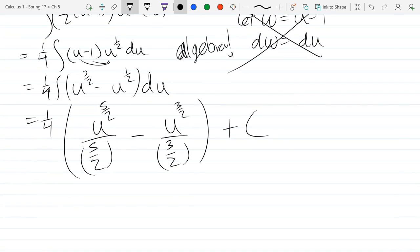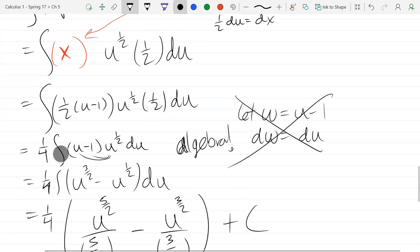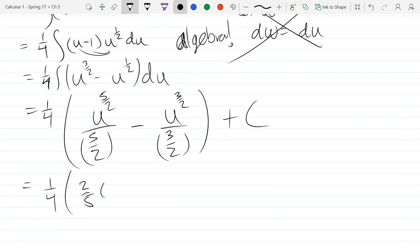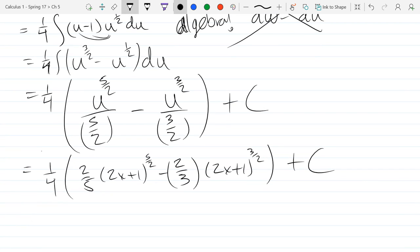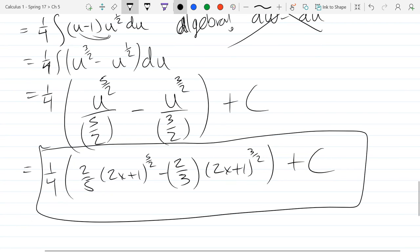And fractions of fractions, let's get out of there. So we got 2 fifths, u is 2x plus 1, 2 thirds, 2x plus 1 to the 3 halves power, plus C. This would be a little bit more tricky to check with the derivative, but not bad. Just remember, you have some chain rule going on, so it wouldn't be too bad to check this.